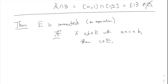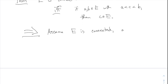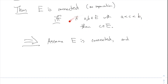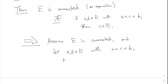Since this is an if-and-only-if, it involves two directions. Let's do the forward direction: assume E is connected, meaning there is no separation of E, and prove the betweenness property. Let a, b be in E with a < c < b; we'll show c is in E. We assume E has no separation, and we have to prove that this other number is also in the set.